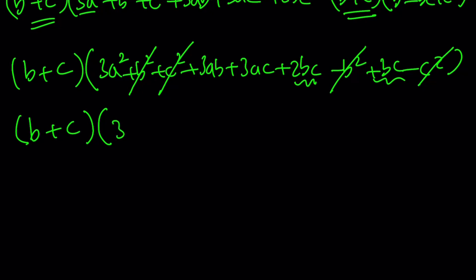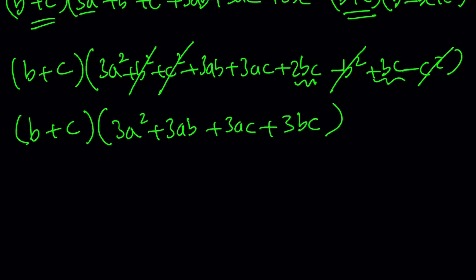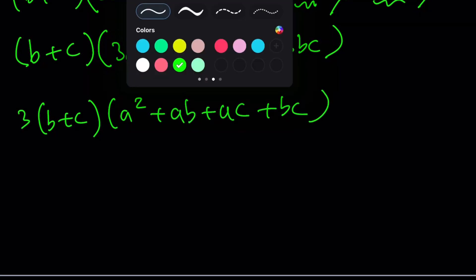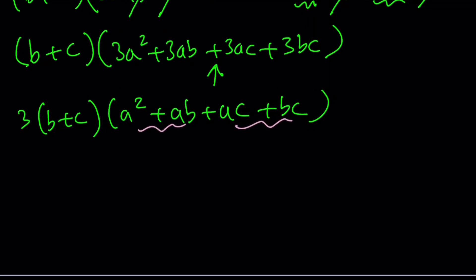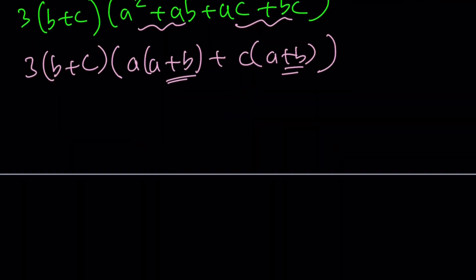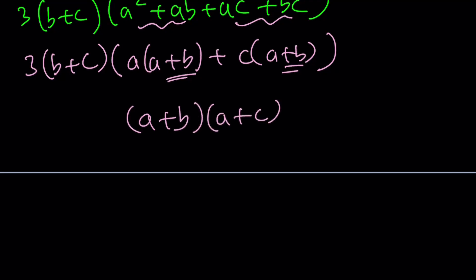So here's what the numerator looks like after all these simplifications: b plus c multiplied by 3a squared plus 3ab plus 3ac plus 3bc. Notice that all these terms have 3 in common, so we can take that out. Then the rest can be factored by grouping — we make two groups: these two and these two. That gives us 3 times b plus c, and then these two terms have a in common and these two terms have c in common. Now we have a plus b as a common factor, so we can take out a plus b, and that gives us times a plus c. So the numerator is 3 times b plus c times a plus b times a plus c.